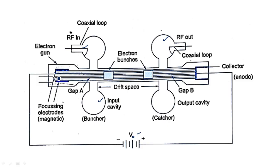When there is no RF input voltage, electrons travel with a constant velocity small v naught — that is the velocity of the electron from cathode to anode with no RF input. When the RF input voltage is applied on the buncher cavity, at gap A three different types of electrons are generated: a reference electron, a late electron, and an early electron, due to the three different positions of the RF signal — positive, negative, and zero potential. Because of these three electrons, an electron bunch is created, which amplifies the signal and goes to gap B, coming out from the catcher cavity.